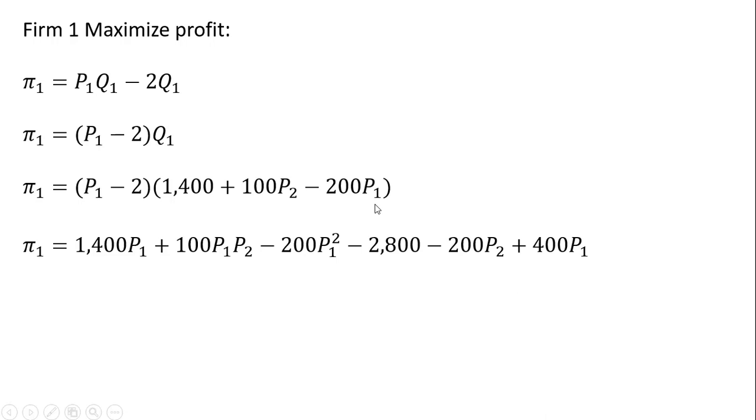We can simplify the right-hand side by taking firm 1's price and multiplying it by 1400 to get this. Then firm 1's price times 100 times firm 2's price gives us this. Firm 1's price multiplied by minus 200 firm 1's price gives us this. And then minus 2 times 1400 plus minus 2 times plus 100 P subscript 2 and so on. The next step here is I just added this 400 P subscript 1 to 1400 P subscript 1. Everything else is unchanged.